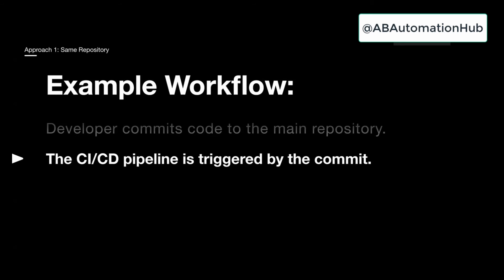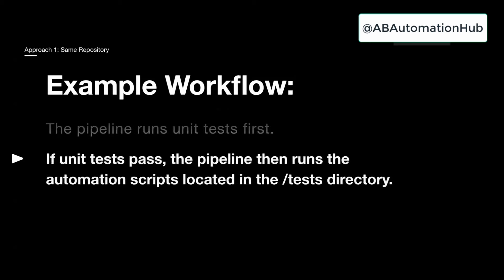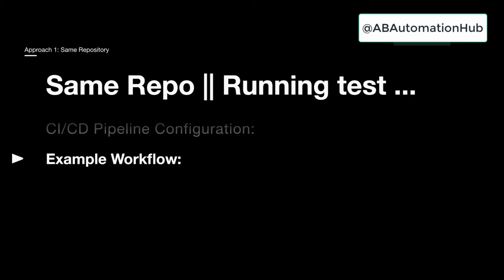In the example workflow, the trigger is a pull request. The pipeline runs unit test cases first. If unit tests pass, the pipeline executes your automation scripts located in the same repository under the test directory. If all test cases pass, the code is merged into master. If there is any failure, the report is shared and the build is failed. That was our first sub-approach.